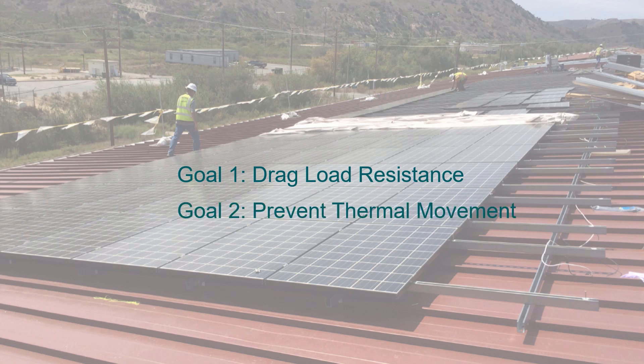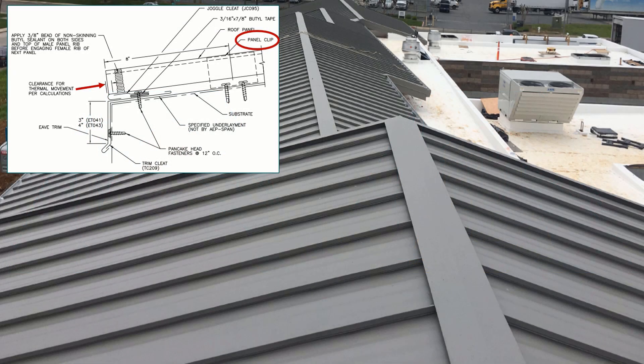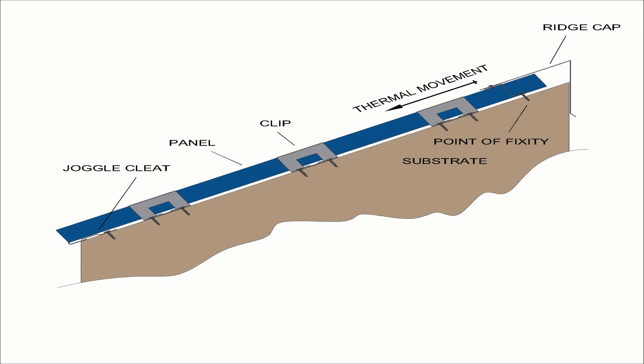The second reason for establishing a point of fixity is to prevent thermal movement at that location and force it in the direction you want it to go. The first and most common way is by fixing the panels at the high side of the roof, preventing thermal movement at the ridge and forcing it to move down slope to the eave line. Manufacturer's details are designed around this requirement.